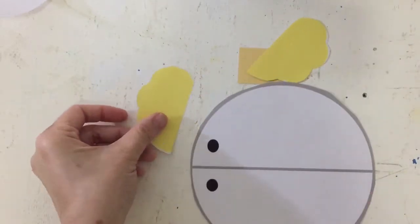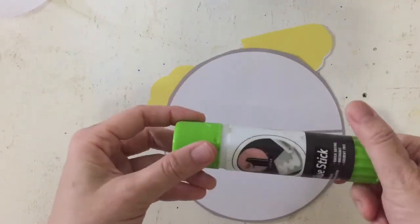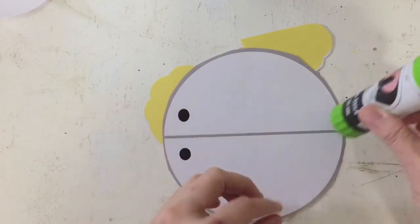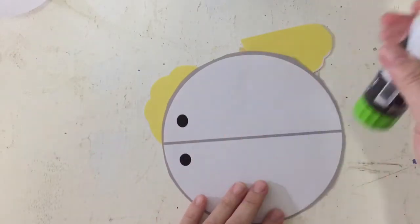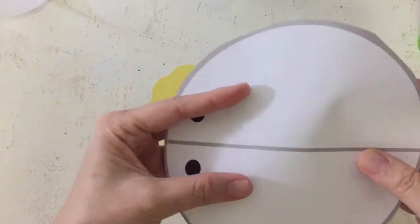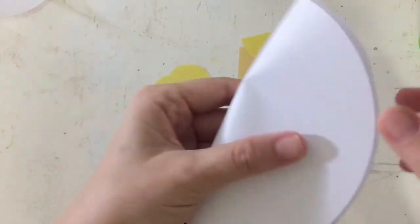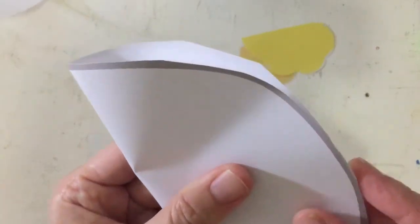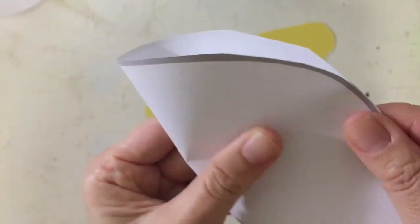And now let's put them all together. First, we fold the circle in half. Don't forget your glue. Like so.